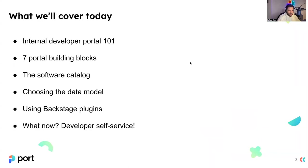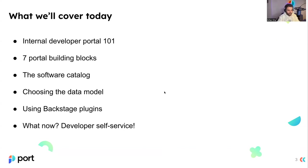In this webinar, we will cover both an introduction to IDPs, the seven pillars that need to be included as part of the IDP that you have. We're going to focus on the software catalog, which is one of the main blocks, and how you should choose the right model for it, how to bring data into the catalog from various sources, how you can use Backstage plugins to do that, and after all this work, what's next for IDP — including self-service for developers.